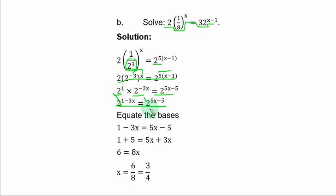If you simplify the left hand side by adding the powers, you have 2 power 1 minus 3S equal to the right hand side. If you equate the bases, you have the powers to be equal. If you collect like terms, you have 1 plus 5 equal to 5S plus 3S, and that is 6 equal to 8S. Divide both sides by 8, S is equal to 6 over 8, and it reduces to 3 over 4.